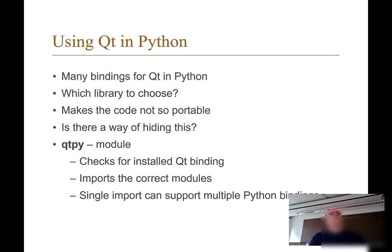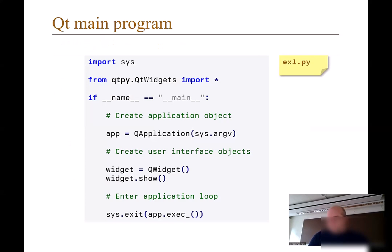There are several Qt Python bindings and choosing one is not easy, and because they have different namespaces, your code will be tied to whichever binding you use. There is a special module called 'qtpy' which checks for installed Qt bindings in your environment and imports the correct modules, so regardless of which Python Qt binding you have installed, qtpy can choose the one to use - allowing a single source code to work with any Python Qt binding.